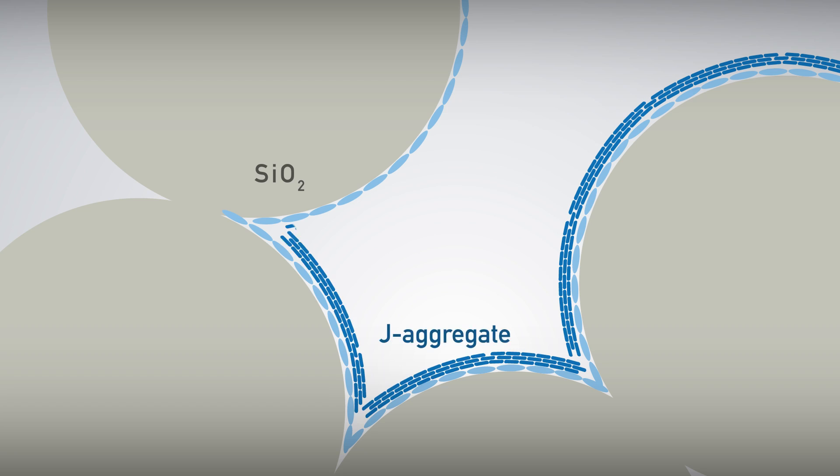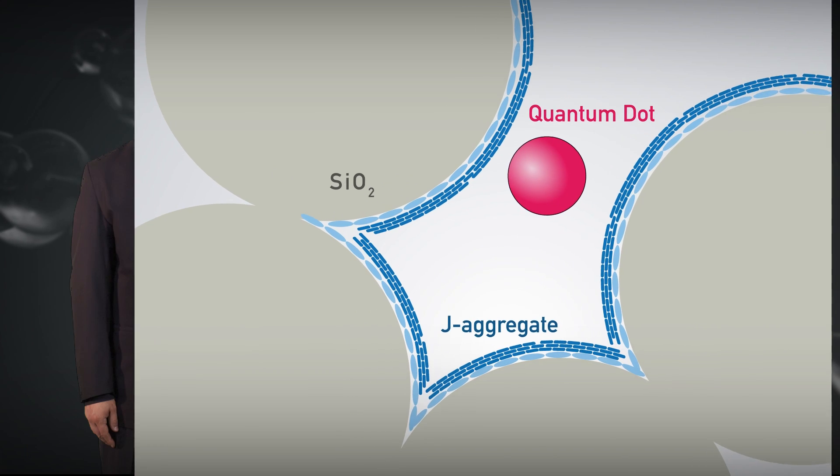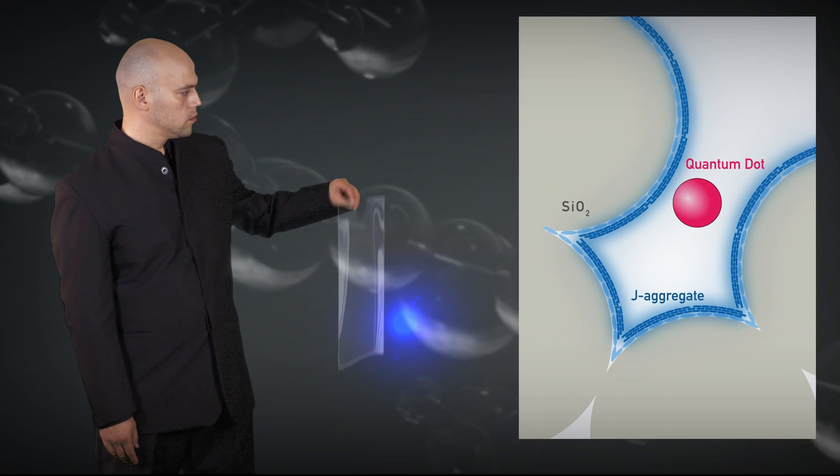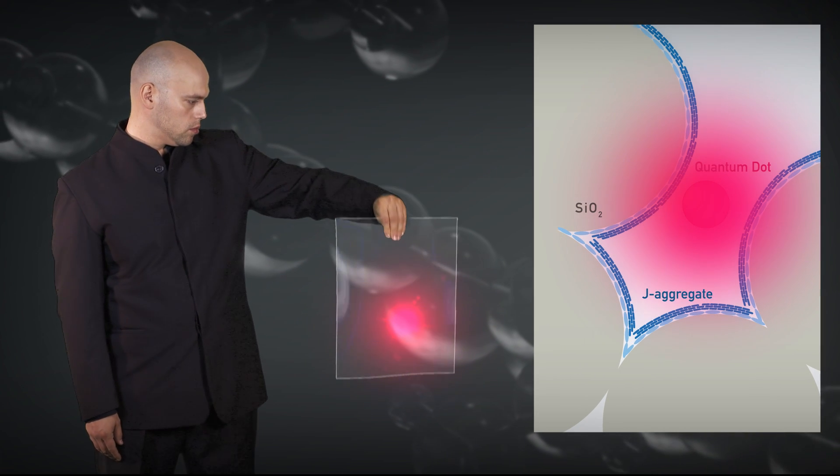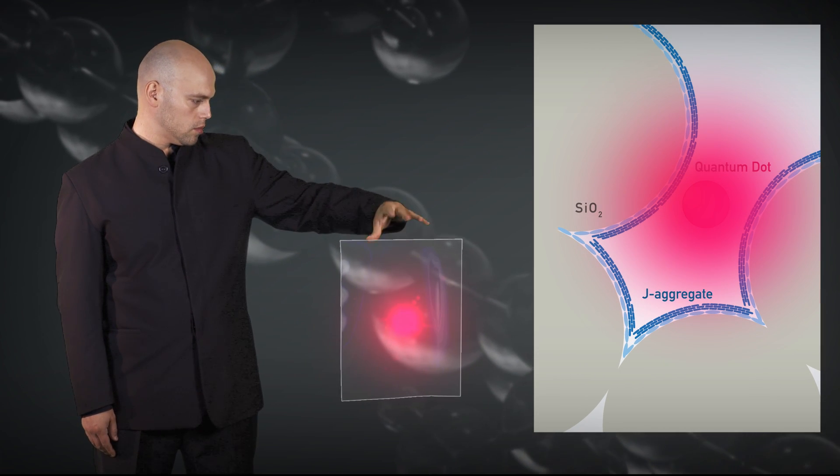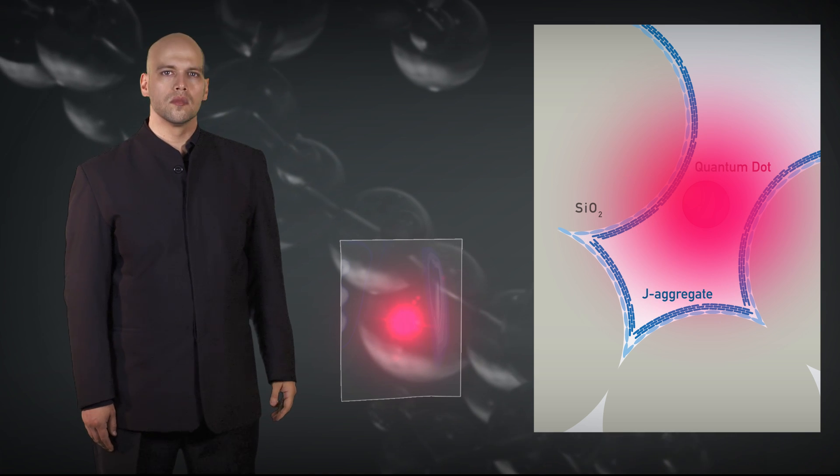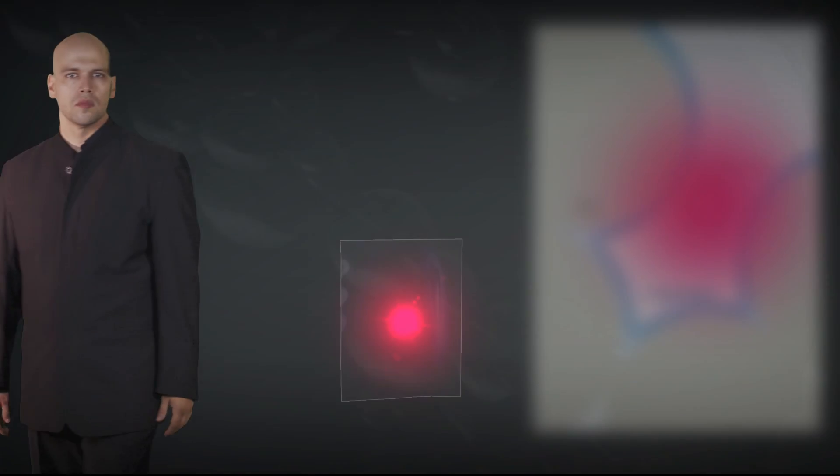The cyanine dye is aggregated onto dendrimer monolayers in the silica nanoporous film. The confinement of the J-aggregates and red or green emitting quantum dots allows for efficient energy transfer and significantly enhances emission.